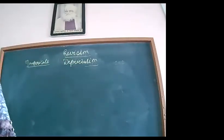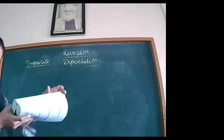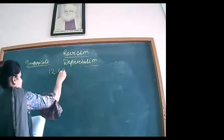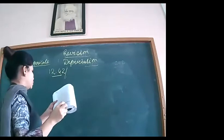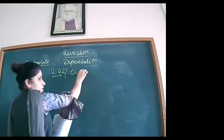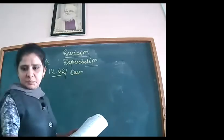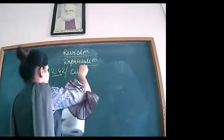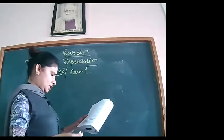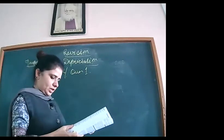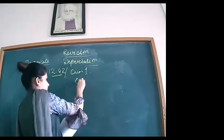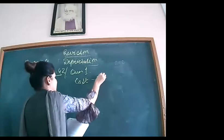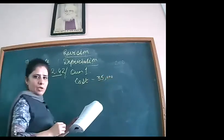Let me look at the first question that can be asked for one mark. The first back exercise question is on page 12.42. On 1st April 2015, a machine was purchased — that is the cost price. The price we pay to buy an asset is called the cost, and here the cost is ₹35,000.